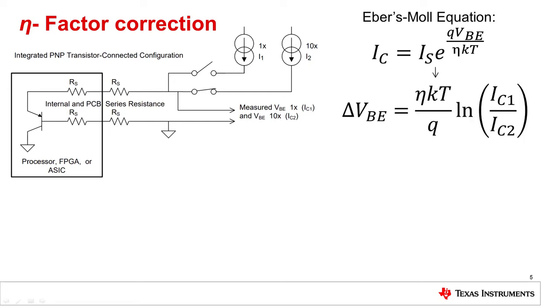This delta VBE term is not dependent on I-sub-S. However, there is an additional factor, represented by the Greek letter eta, that we must consider. This is the device's non-ideality, or n-factor, and may be specified by the manufacturer. The TMP464 and 468 both have registers to hold this value for each channel, so that everyone can simultaneously be monitoring a different kind of transistor.